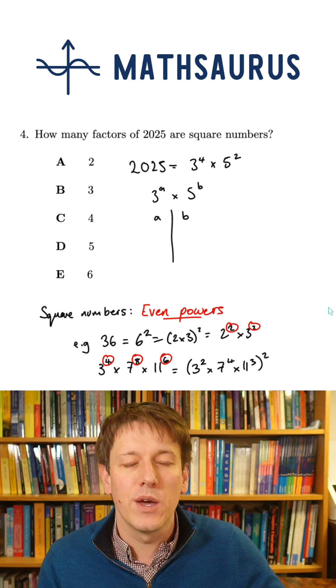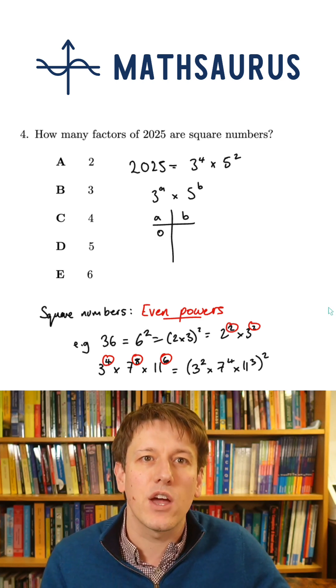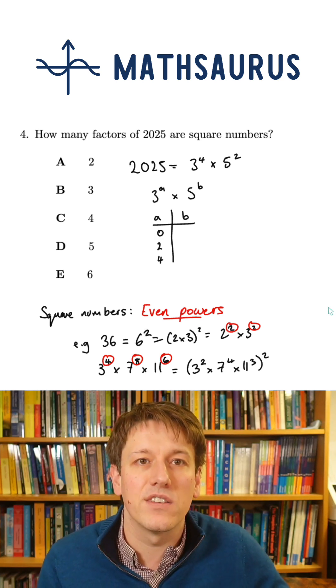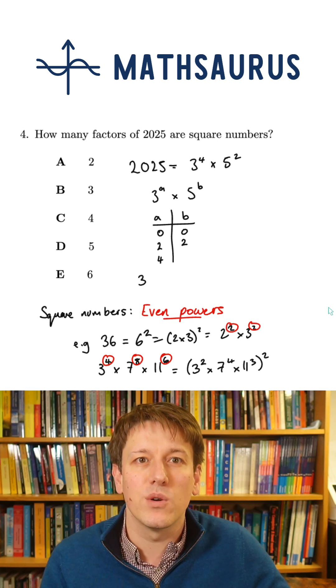and b has to be less than or equal to 2. So an efficient way of solving this is to say, I can have a as either 0, 2, or 4, and b as 0 or 2. And I can match up those powers,